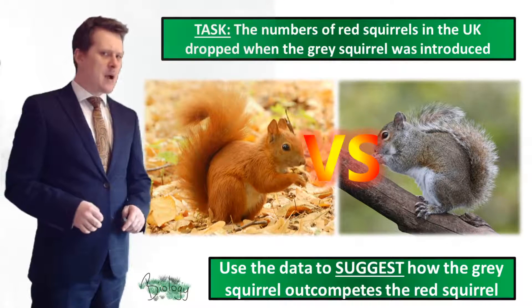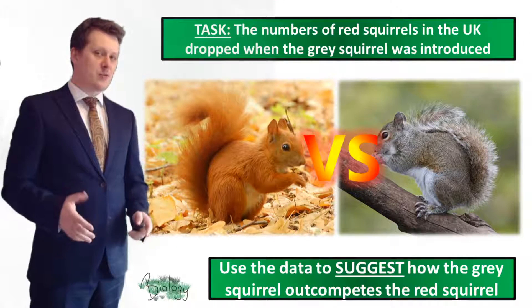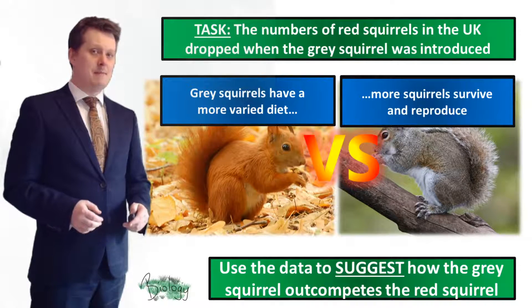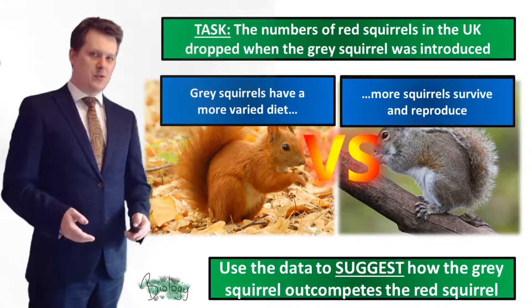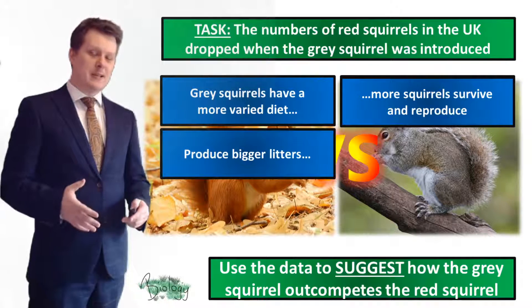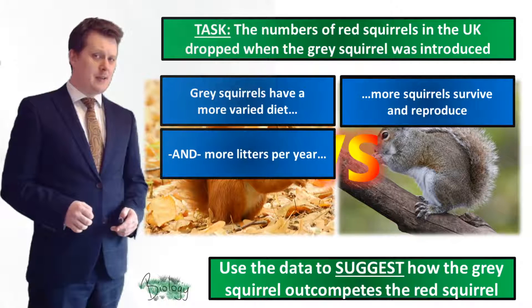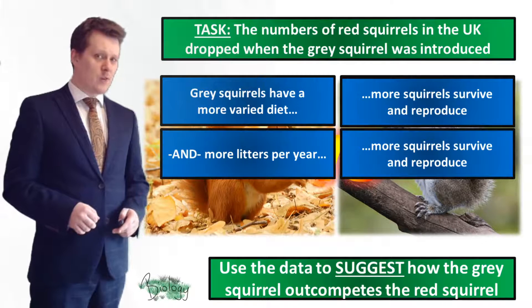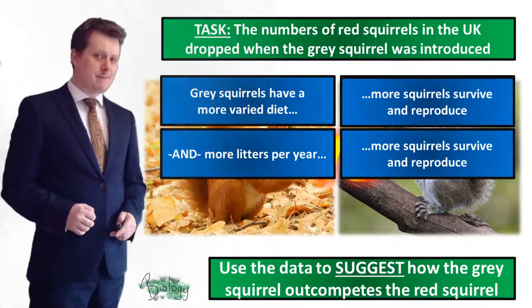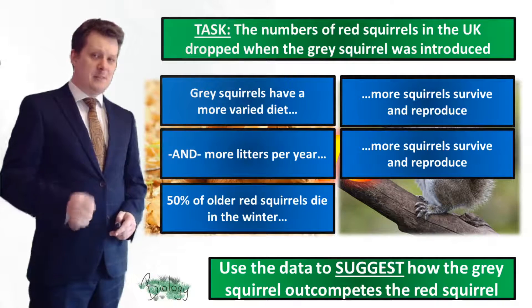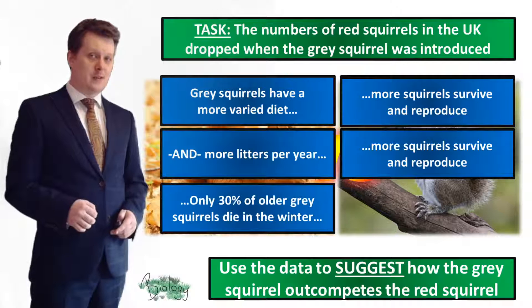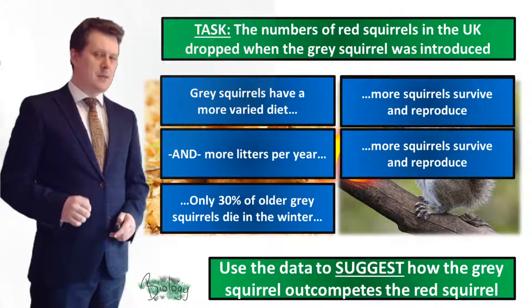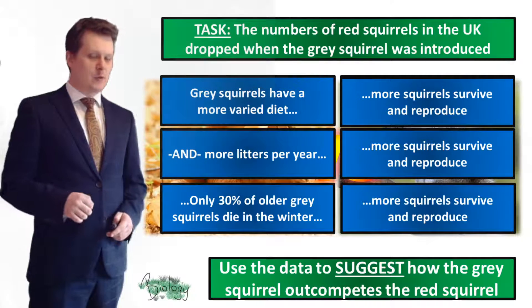Grey squirrels have a more varied diet — this means they're more likely to find food, and because of that they're more likely to survive and reproduce. Grey squirrels also produce bigger litters and have more than one litter per year; because of this increase in number, more squirrels are going to survive and more are going to reproduce. And once past their first winter, 50% of older red squirrels will die in the winter, whereas only 30% of older grey squirrels die in the winter — meaning more grey squirrels survive and reproduce.